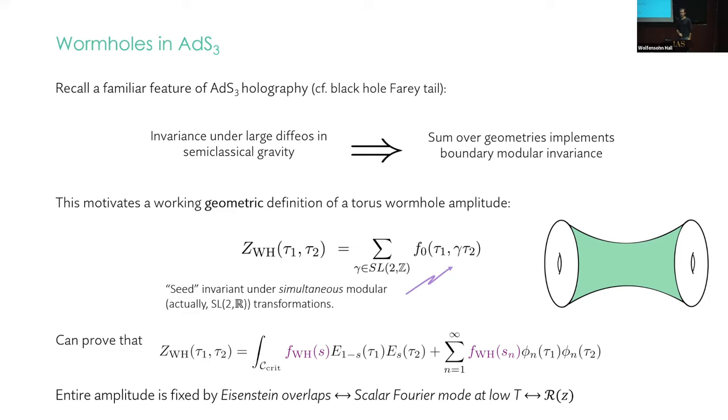So we haven't talked so much about the cusp forms, what they mean, but just recall that previously this and this were independent functions. But for wormholes, they are the same function. And indeed, this function is totally fixed by the scalar Fourier mode at low temperature. That's what we call this R of Z before. So these are highly symmetric functions in this class of two boundary, two copy partition functions.